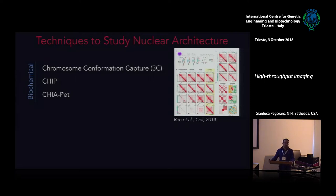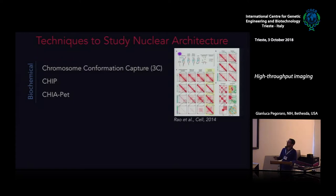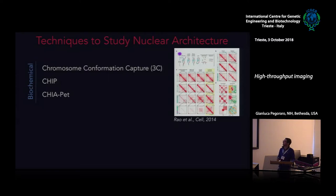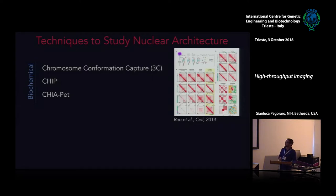Historically, there have been two classes of techniques to study nuclear architecture. The more recent one is based on biochemical techniques — the family of chromosome conformation capture, or 3C techniques, Hi-C and ChIP-PET. These have revolutionized the field in the past 5 to 10 years, allowing visualization of 3D genome structure genome-wide at very high resolution.